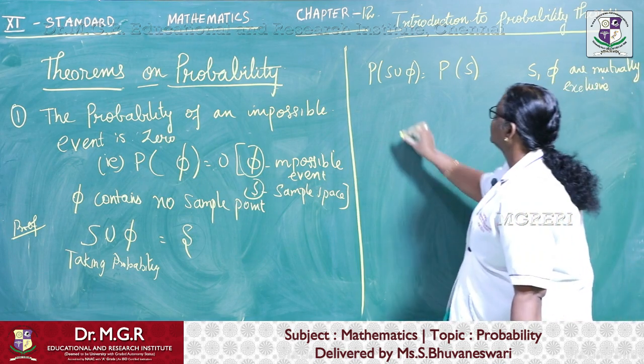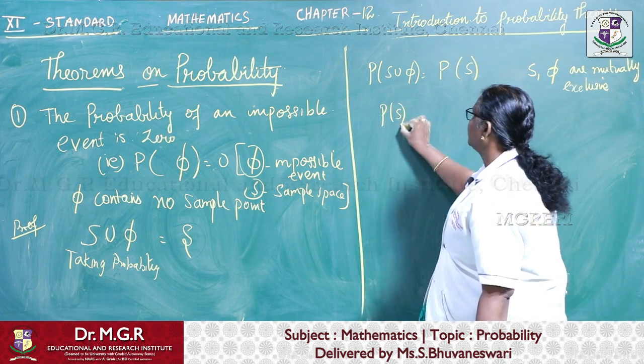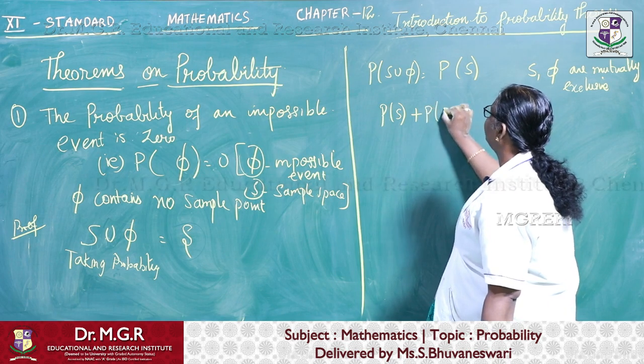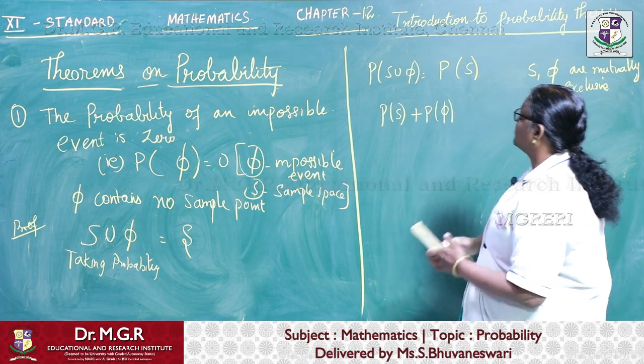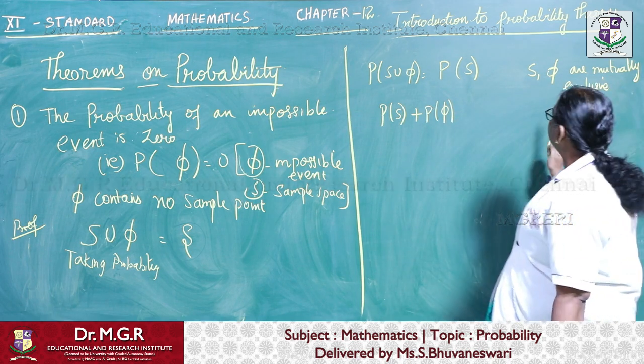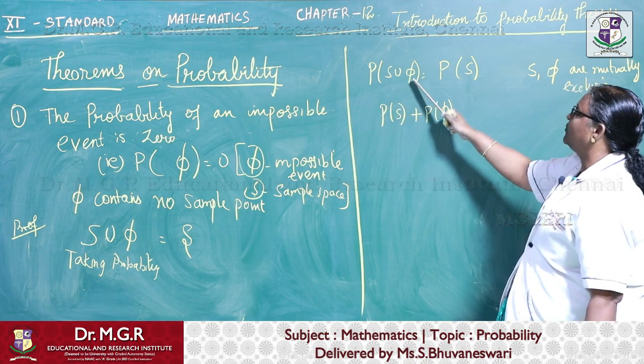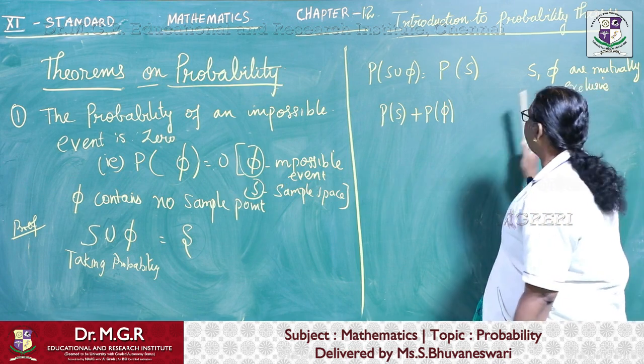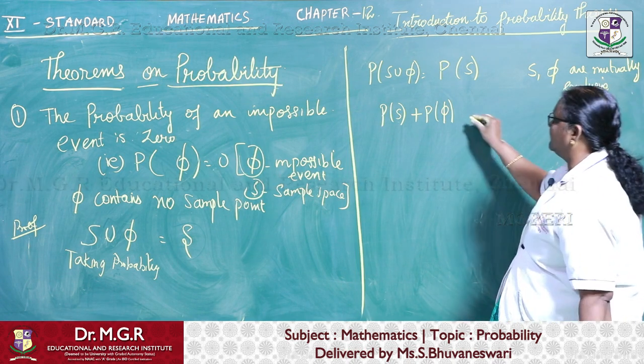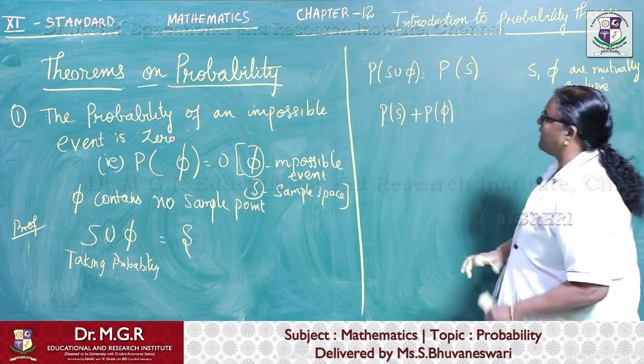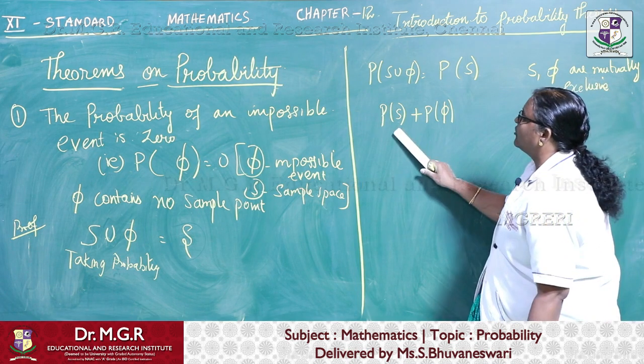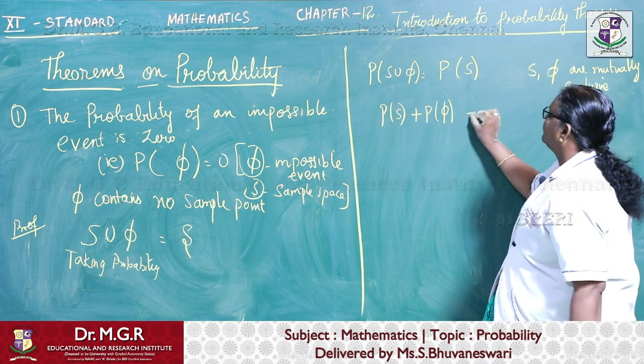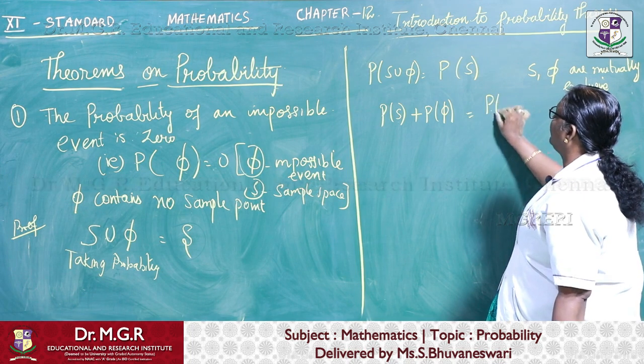So we can write it as P of S plus P of phi. If two events are mutually exclusive, we have defined in the definition P of A union B can be written as P of A plus P of B provided A and B are mutually exclusive events. So instead of A and B, we are having S and phi over here. P of S plus P of phi which is equal to P of S.